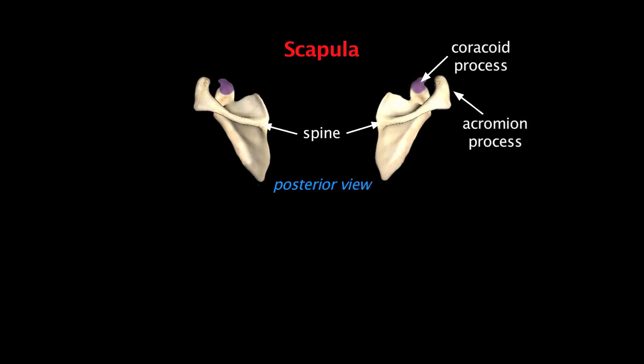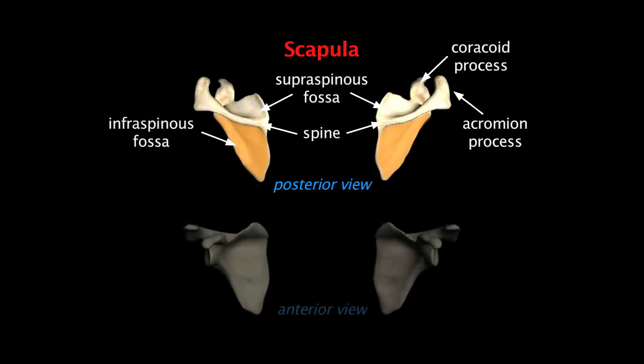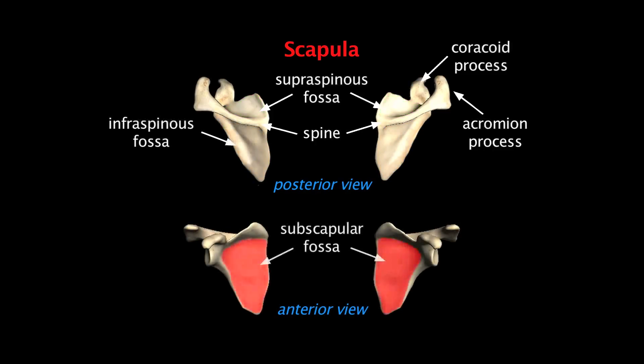Above the scapular spine is an indentation called the supraspinous fossa. Below it is another called the infraspinous fossa, and on the anterior surface of the scapula is the subscapular fossa. All of these are attachment sites for muscles of the rotator cuff.